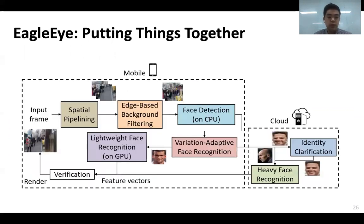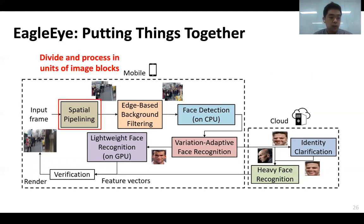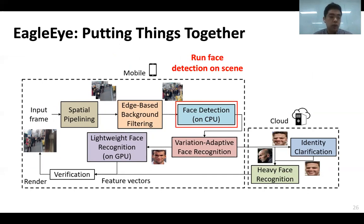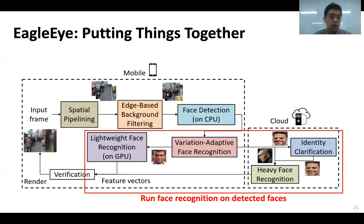Putting all these techniques together, our EagleEye system works as follows. Given an input scene, spatial pipelining divides and processes the image in units of image blocks. Edge-based background filtering removes background blocks. For the remaining ones, we detect the faces, and the detected faces are then processed by Variation Adaptive Face Recognition in parallel over mobile and cloud.